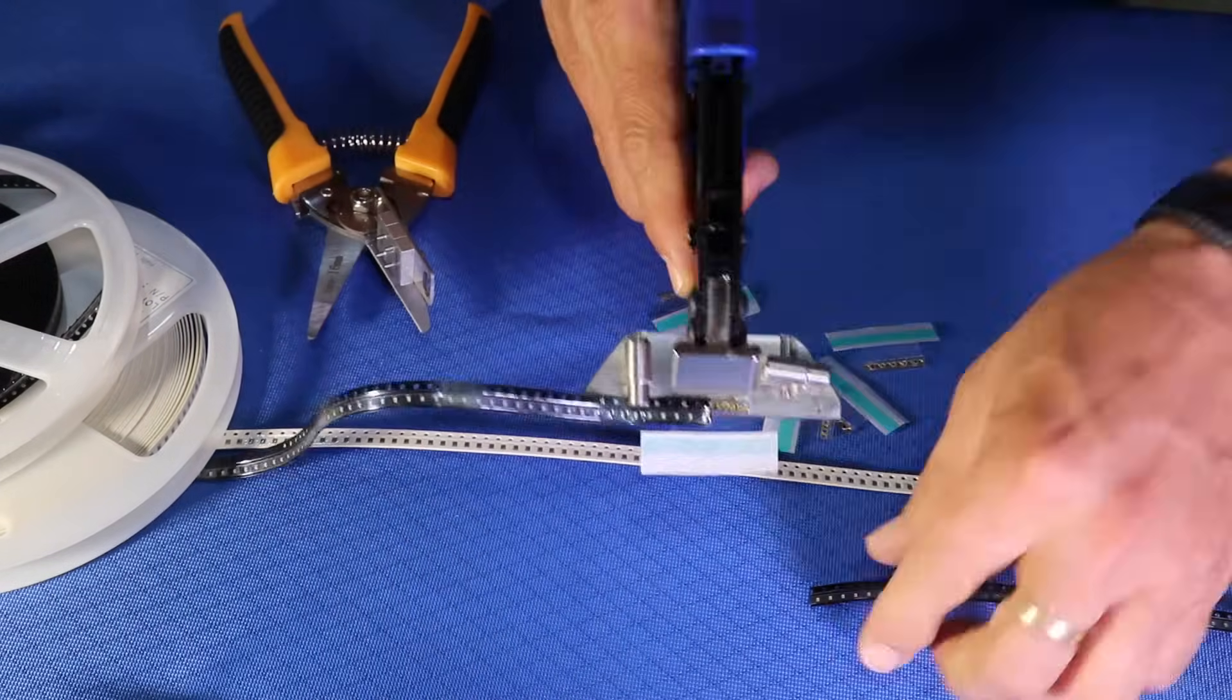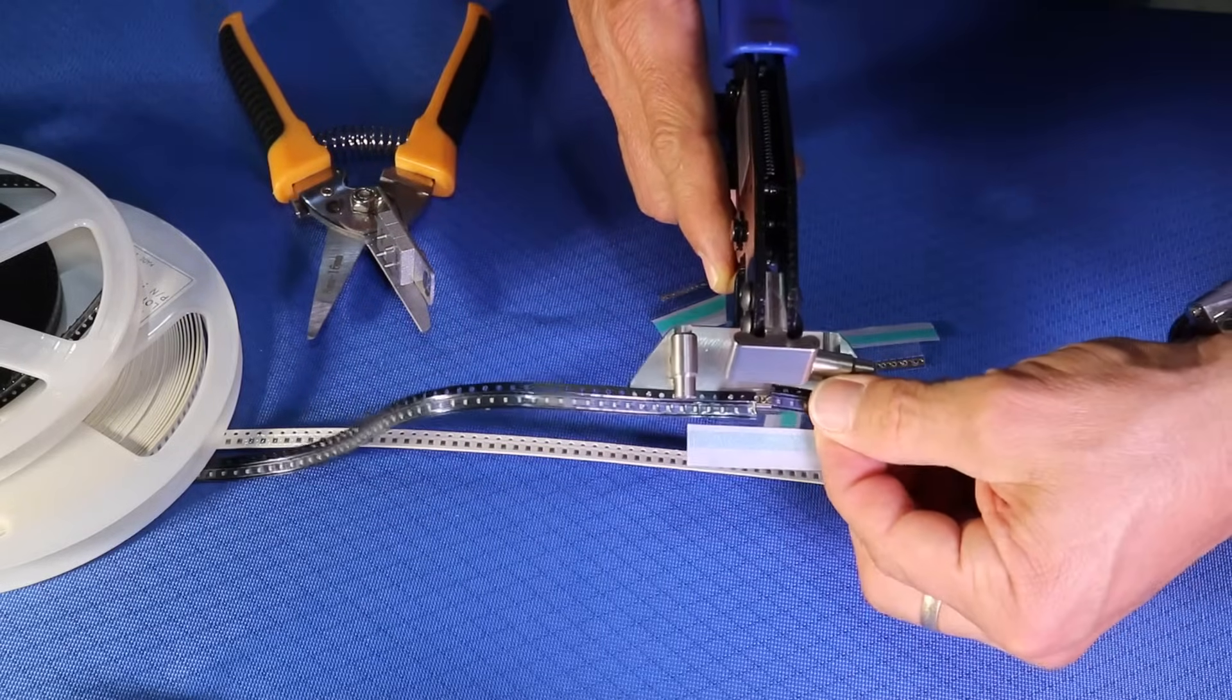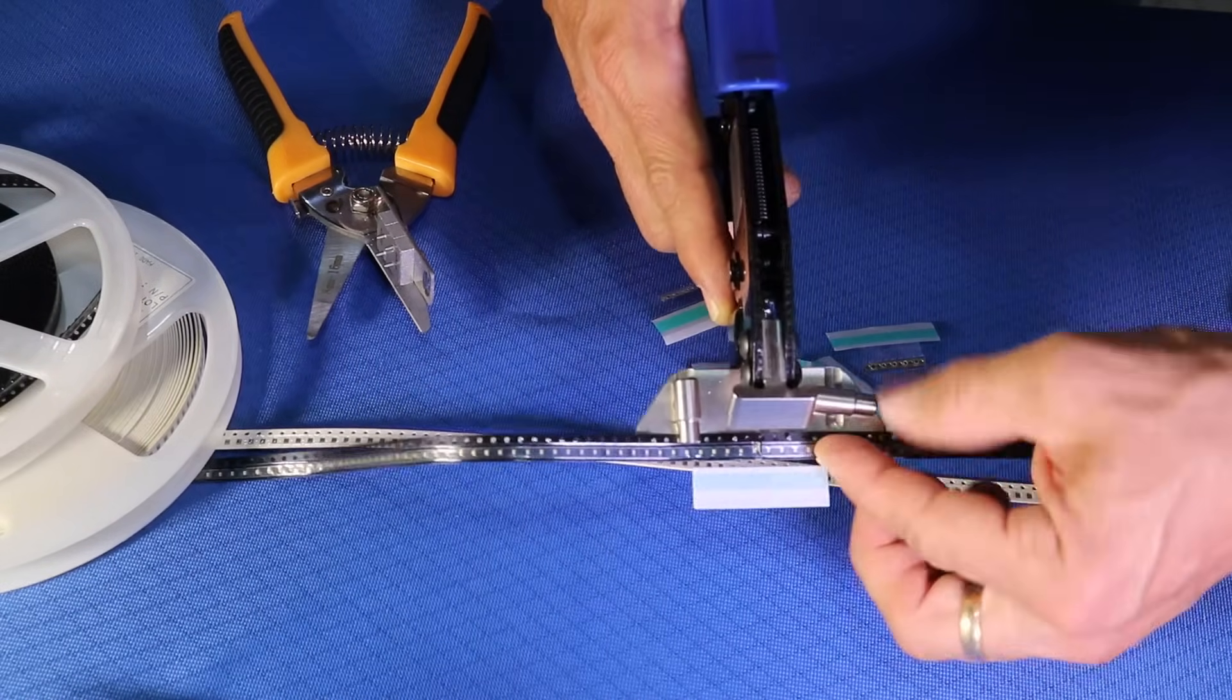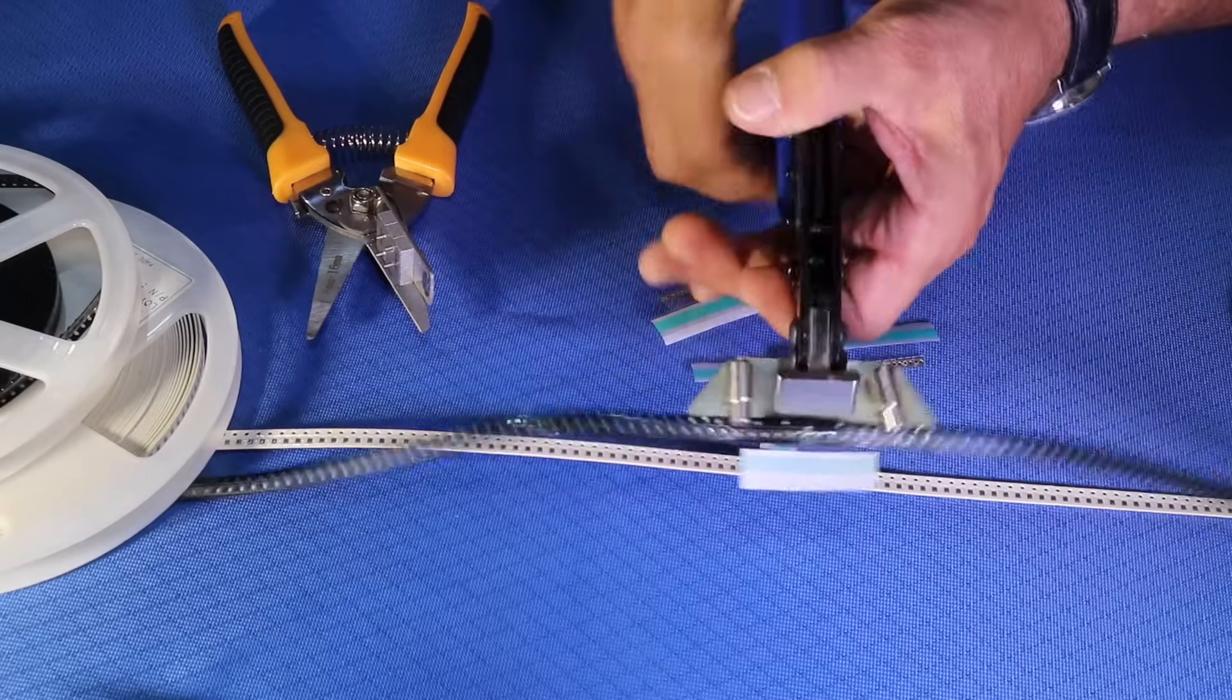We have hold downs to keep the carrier tape from wobbling around. We'll butt those two pieces up against each other, and then we'll crimp the tool.